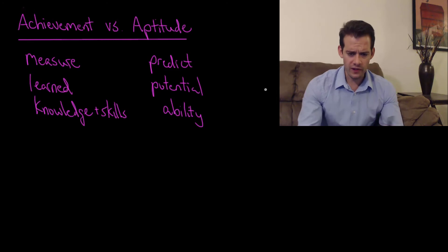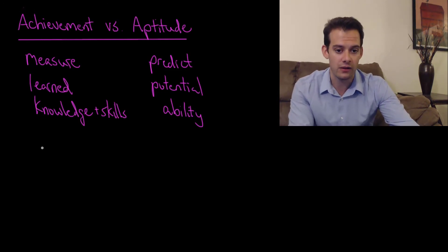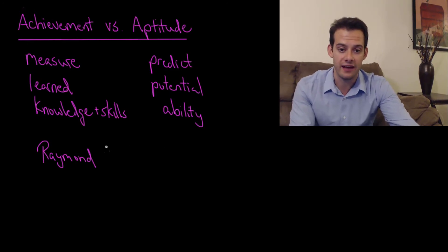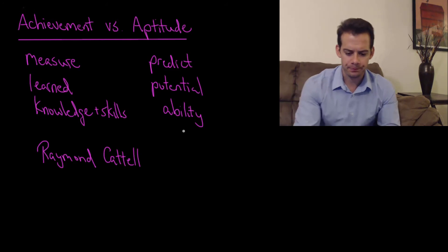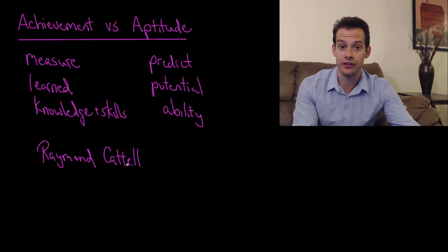Now this brings us to a distinction in thinking about intelligence. We might say well there's the intelligence for things that you've learned and then there's intelligence for your capacity to solve new problems. And so this is a distinction that was made by Raymond Cattell and he used factor analysis to separate these two types of intelligence. And Cattell referred to these as crystallized intelligence and fluid intelligence.